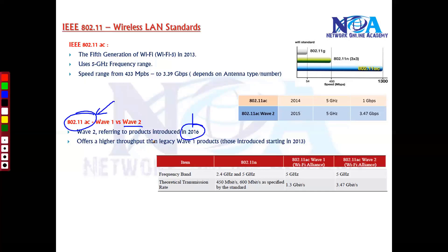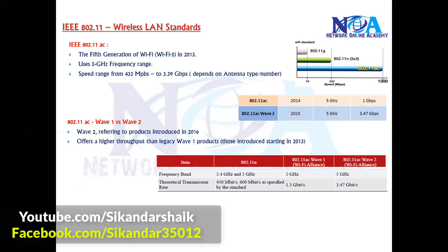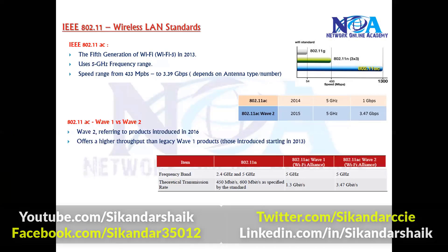Nowadays, most 802.11ac standards you will see are considered Wave 2, supporting plenty of devices introduced from 2016 onwards. Regarding distance, it will vary — it can be around 70 meters, 35 meters, or 33 meters — depending on the device and antenna used. Higher throughput devices tend to have a smaller coverage area, which is a limitation, but the key advantage of this standard is its high throughput.